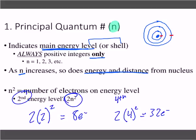That's our first quantum number. Think of it like this: the electron cloud is the country, and now the principal energy level is kind of like what state you're in. We're starting to narrow it down a little bit further.